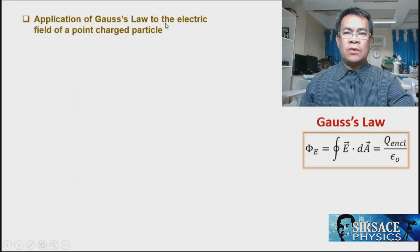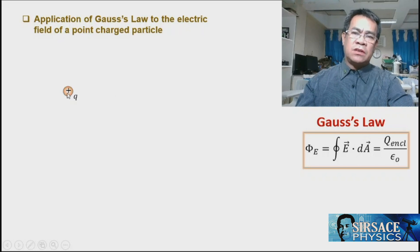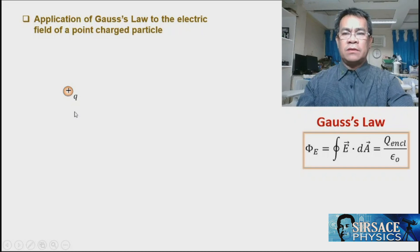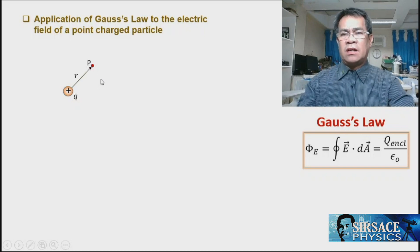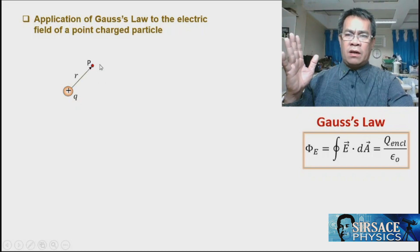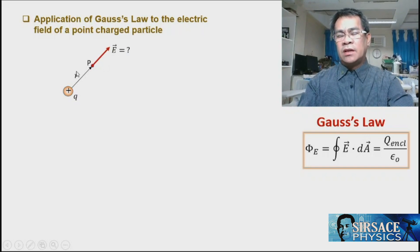For the first application, we apply Gauss's Law to the electric field of a point charge particle. Consider a charge q at a point; we want to know how much electric field exists at a distance r. We are to calculate the electric field in terms of q and r.